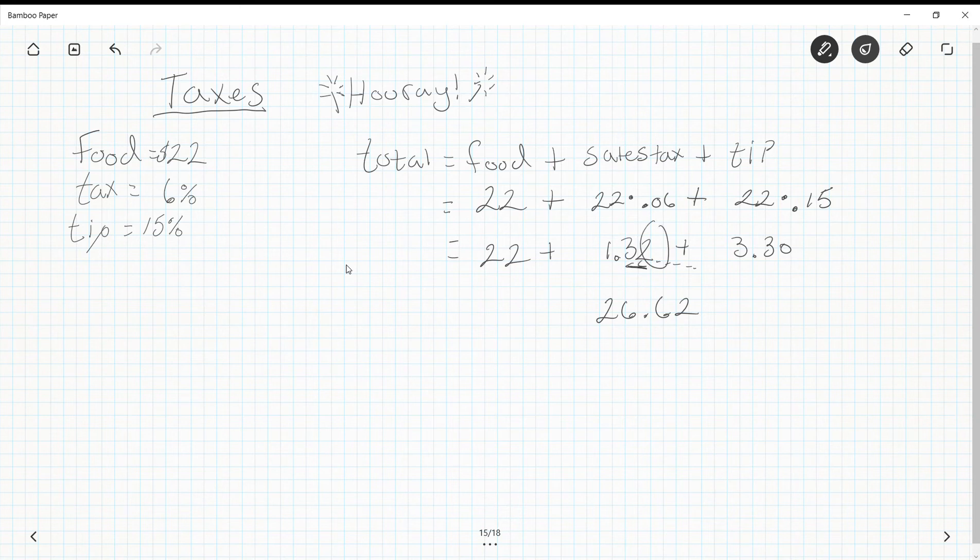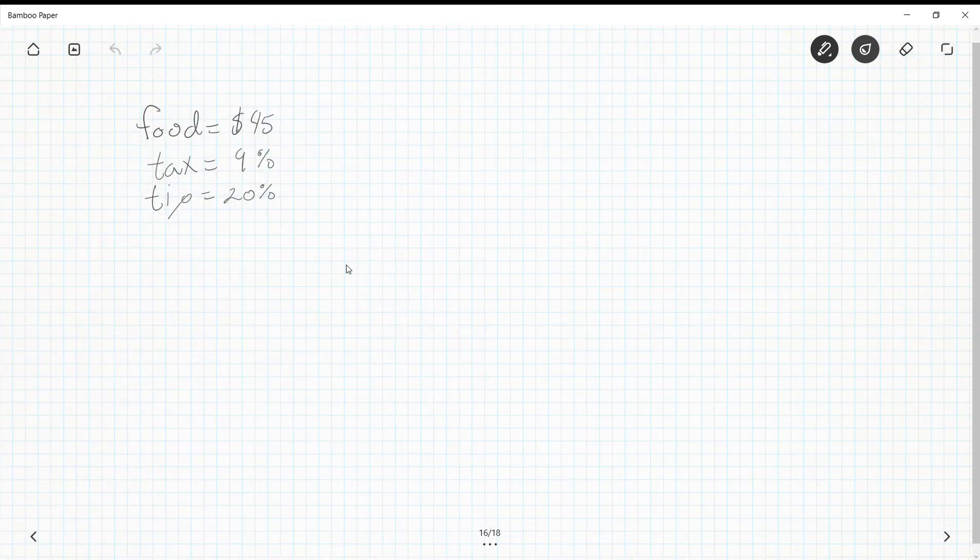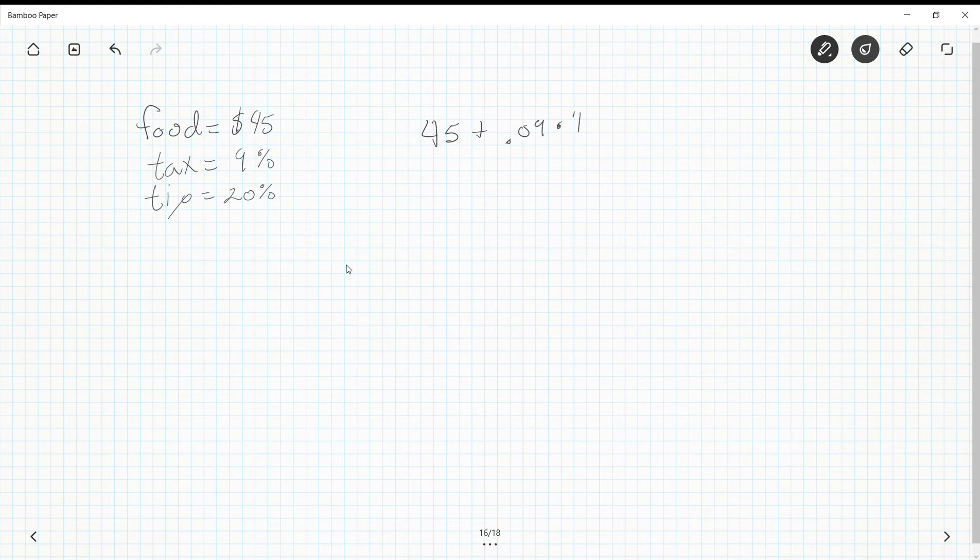Looking to the next one, try this one on your own. I'm gonna solve it in a second. So we do food $45 plus the tax on the food 0.09 times 45, plus 20% tip so 0.2 times 45. And I get 45 plus 0.09 is $4.05, plus 0.2 times 45.